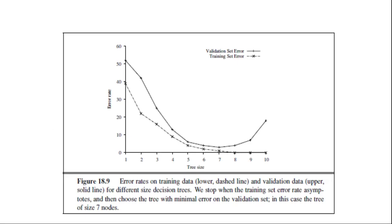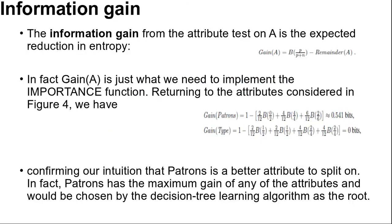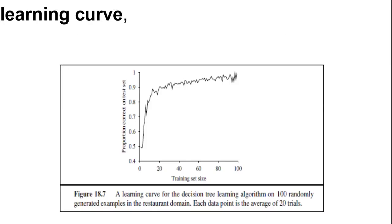We already see from the learning curve for decision tree learning on the restaurant problem, here is the curve. This is our restaurant problem related learning curve and it improves with more training data. Learning curves are useful, but they are specific to a particular learning algorithm on a particular problem.